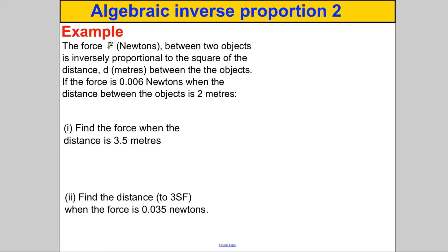Next one. Pause the video, have a go. Reading the question super carefully: the force, capital F in Newtons, between two objects is inversely proportional to the square of the distance in meters between the objects. And then it tells you if the force is 0.006 Newtons when the distance between the objects is 2 meters, find various things.